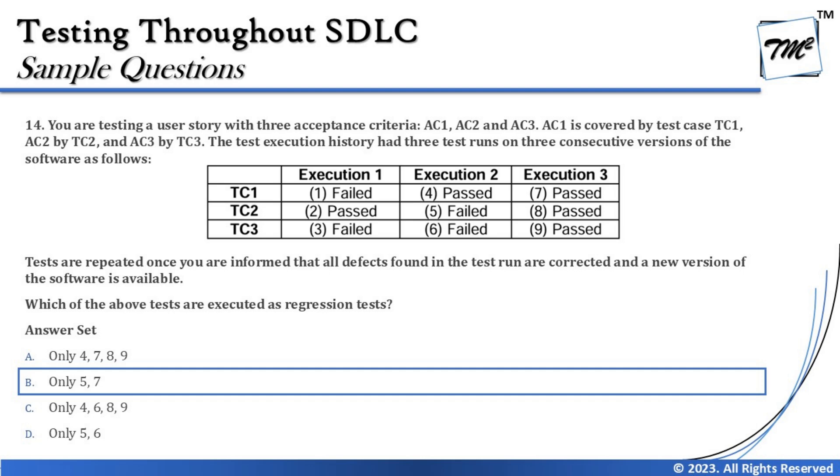The right answer for question 14 is B — only tests 5 and 7 are executed as regression tests. That makes it very clear for the logical-based understanding of these concepts and should give you clarity on picking the right answer. That's all from this tutorial. Feel free to comment below with any queries. Till then, keep learning, keep exploring, keep understanding the context. Thanks for watching and happy learning!